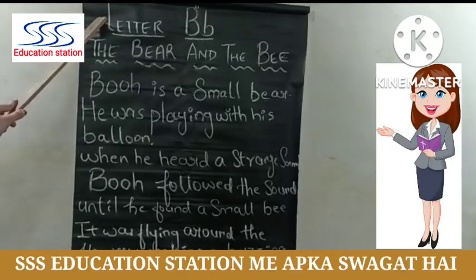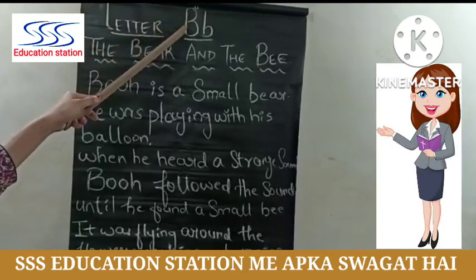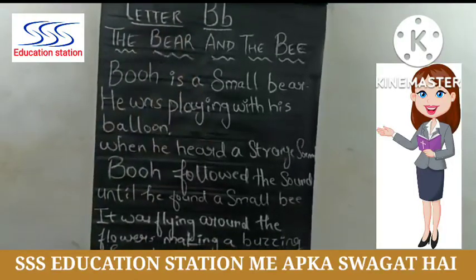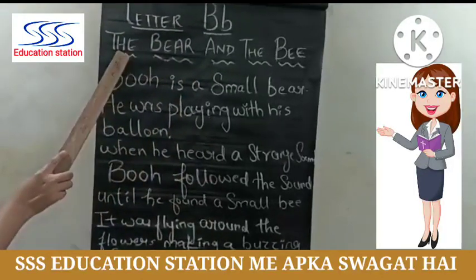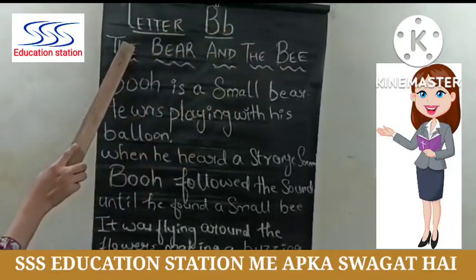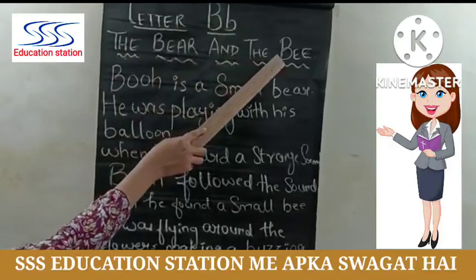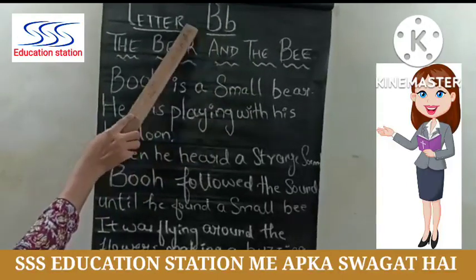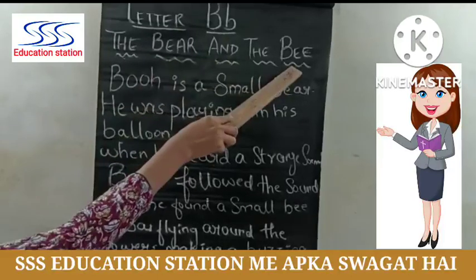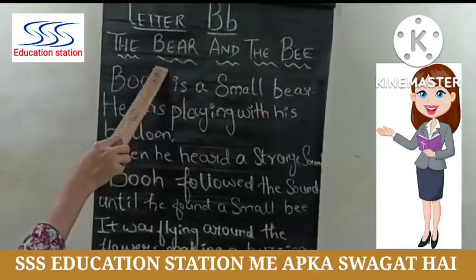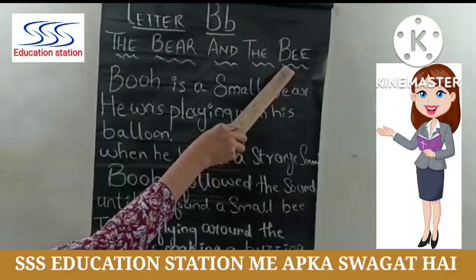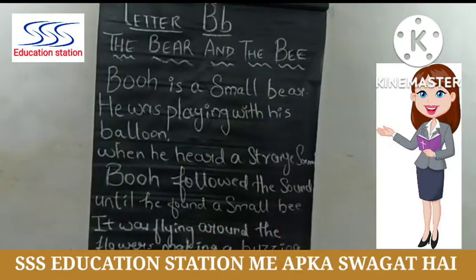Now see letter B. We will read a story: The Bear and the Bee. There are two characters — Bear and Bee. Beer का मतलब होता है भालू, and Bee का मतलब होता है मधु मक्खी.